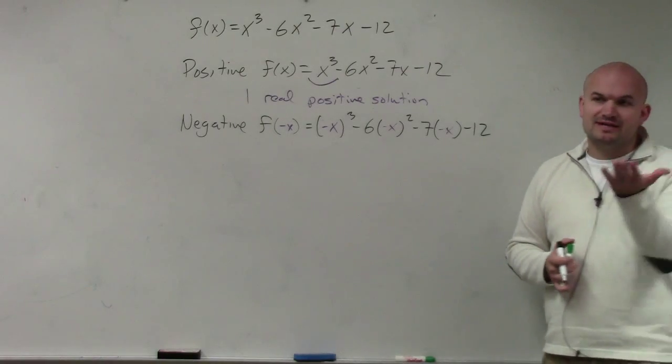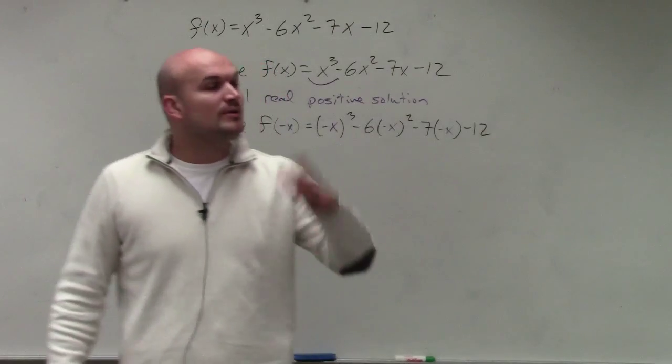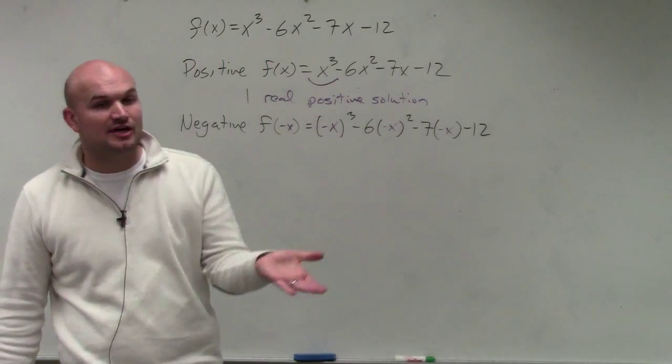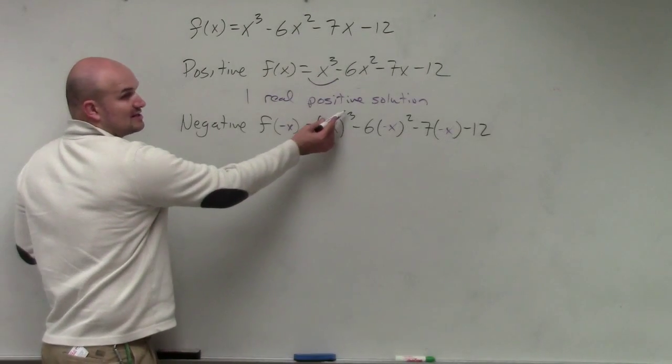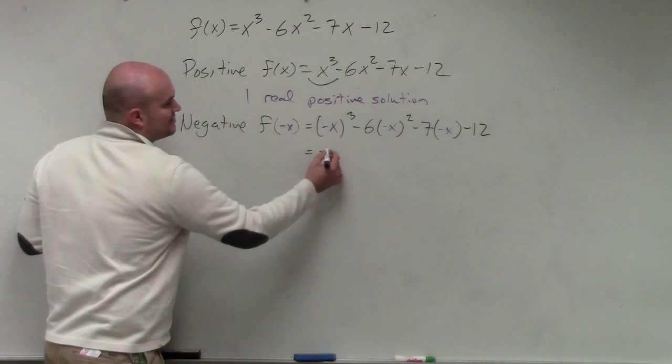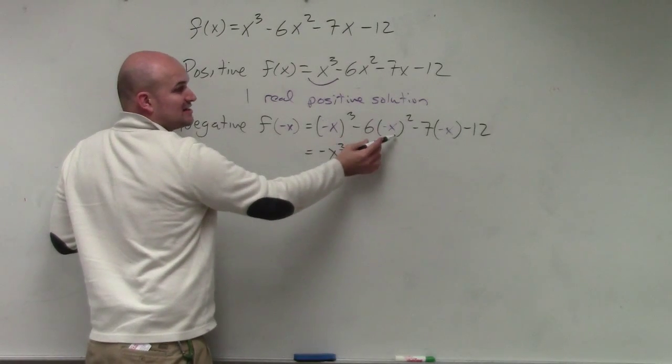Just remember, whenever you have a negative value raised to an odd power, it's still going to be negative. Whenever you have an odd value raised to an even power, it's going to turn positive. So negative x cubed is going to now turn into negative x cubed. Negative x squared is now positive x squared.